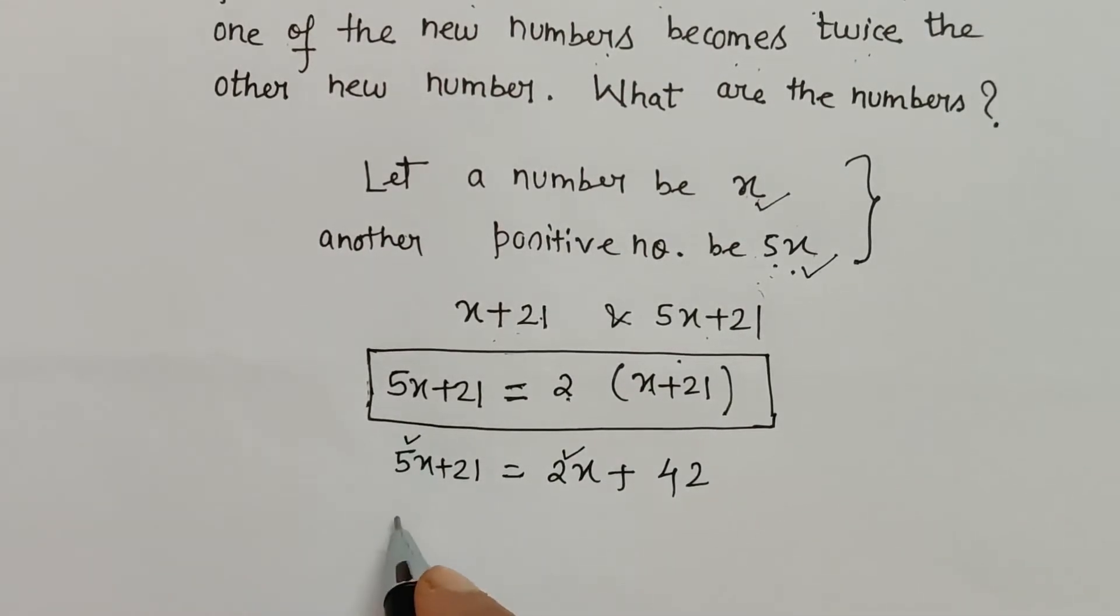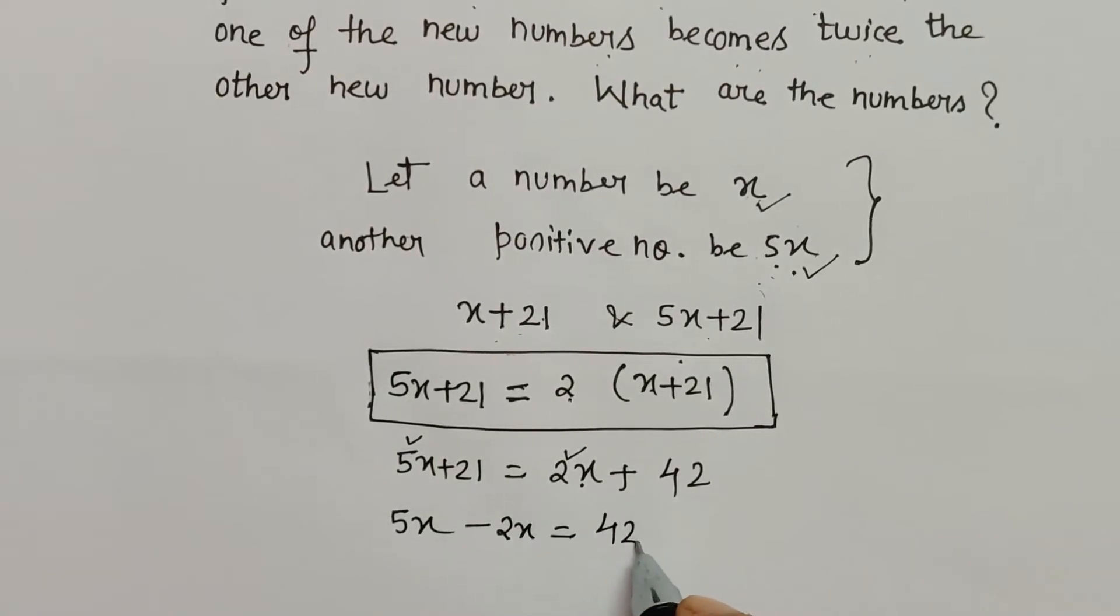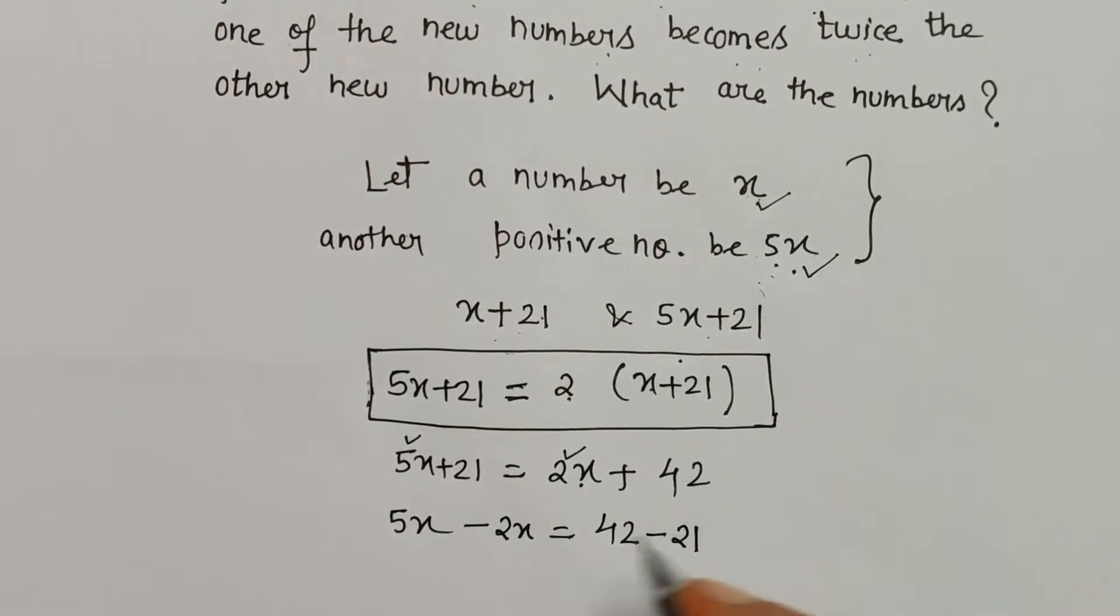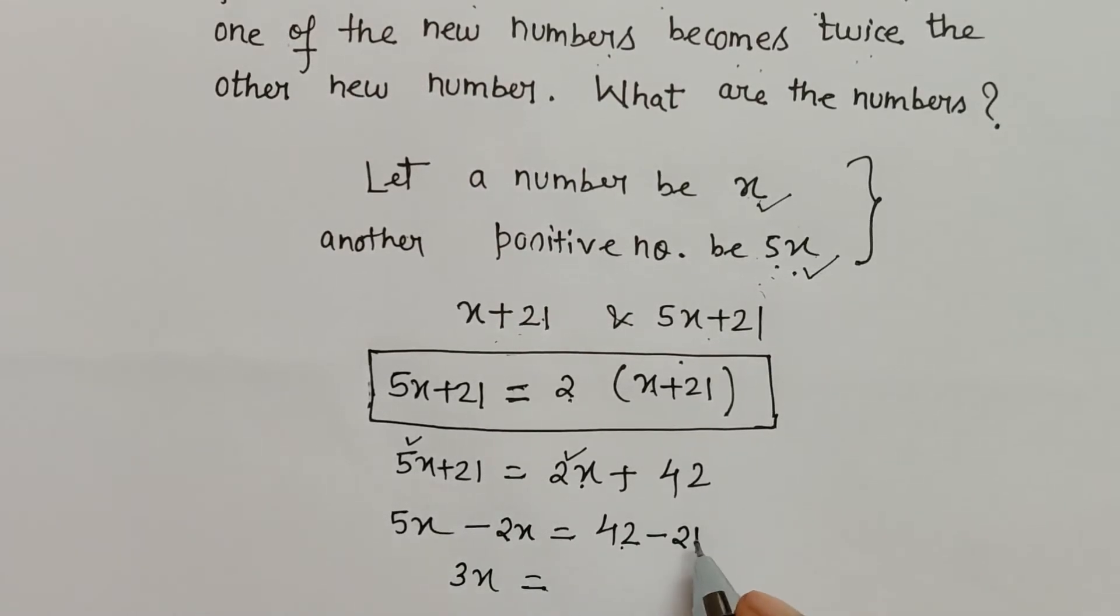Now let's shift the like terms together. So this and this will come together. 5x, I will transpose 2x to the left hand side, its sign will change minus 2x. And this 42 is already here. This plus 21, when transposed to right hand side, it will also change its sign minus 21. 5x - 2x is 3x. Now 42 - 21 is 21.